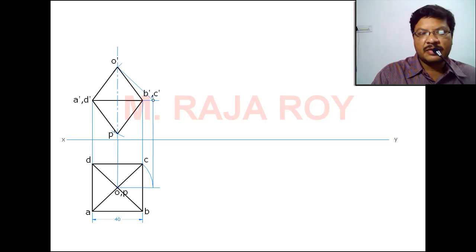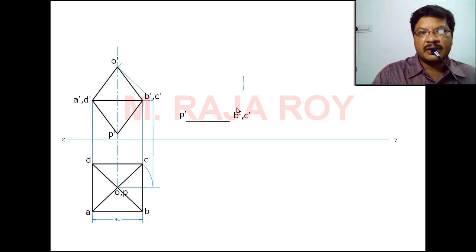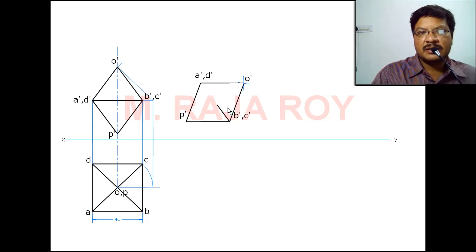After getting the front view, in the second stage you have to keep the triangular face parallel to HP. Take a line parallel to XY, call one end P' and the other end B'C' — that length corresponds to this particular length. Then from P', taking O'B' as radius, draw an arc, and draw another arc from B' and C' taking this particular length as radius. Then you will automatically get the O' point. Join like this, and from P' draw a line parallel to this and complete it — you will get the second front view.